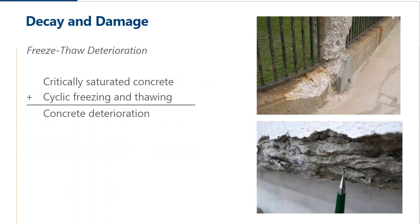Another common form of deterioration is freeze-thaw deterioration. This occurs when concrete is critically saturated and then exposed to cyclic freezing and thawing — going above and below the freezing point of 32 degrees Fahrenheit or zero Celsius — resulting in damage to the concrete. The level of freeze-thaw damage is dependent on the regional weather and exposure. Today, air entrainment is used which greatly increases durability in a freeze-thaw environment, but most of the structures we're talking about today do not have that admixture.